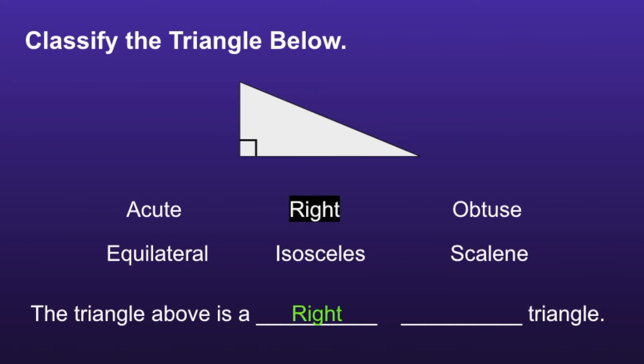And if we look at the side lengths, we cannot see any lines, which means none of these sides are congruent. That would make this a scalene triangle. So the triangle above is a right scalene triangle.